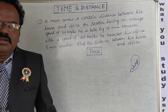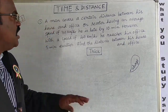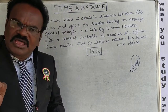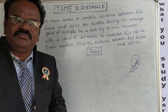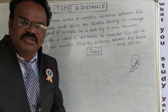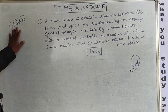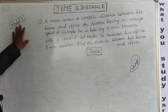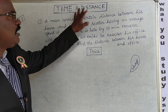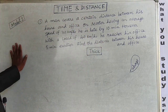Dear friends, today we are going for the new concept — time and distance. We can do all sums very easily using a tricky method. This is Model One, based on time and distance.